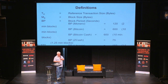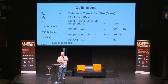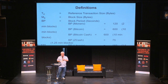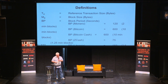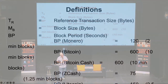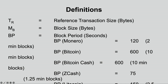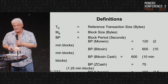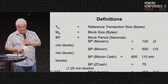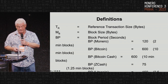I'll briefly go through some definitions: TR being the reference transaction size, MB being the block size in bytes. I'm introducing a concept called the block period in seconds — basically how many seconds are between blocks — in the range of about 120 seconds (two minutes) for Monero, 600 seconds (ten minutes) for Bitcoin or Bitcoin Cash. Some coins are faster: ZCash is 75, Litecoin is about 150. Ethereum is really fast at 12 to 15 seconds between blocks.